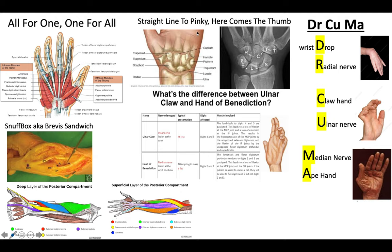Moving on to the right, here's another memory hook to help keep the carpal bones straight. The mnemonic is 'Straight Line To Pinky, Here Comes The Thumb.' Straight is the Scaphoid bone, located just above the radius. Line is the Lunate bone. Next is Triquetrum, then just above that is Pisiform. Then you have the Hamate, famous for its hook. Comes is the Capitate bone, the 'F' is Trapezoid, and finally Trapezium.